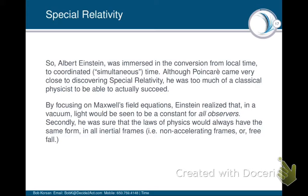Now, as both his history and his focus on the patent information that came to him, Einstein was immersed in the conversion from local time to coordinated or simultaneous time. Poincaré came very close to discovering special relativity, but he was too much of a classical physicist to actually be able to succeed.